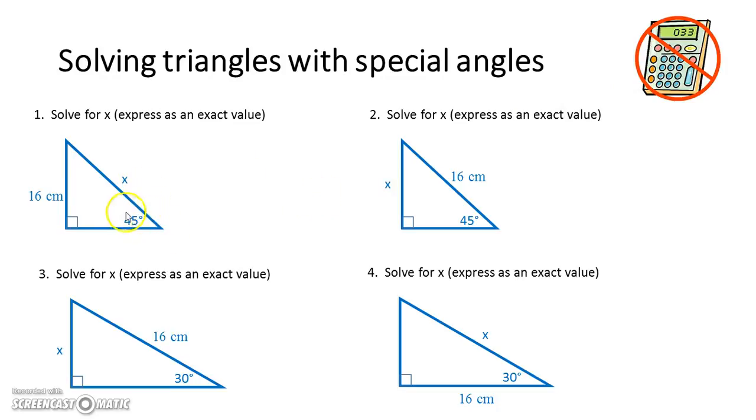Here we go. This first one, we have the opposite and the hypotenuse. So that's opposite over hypotenuse is sine. So sine 45 is 16 over x. But we remember that sine 45 is one on root two. And then we just rearrange our values to give us x is 16 root two.